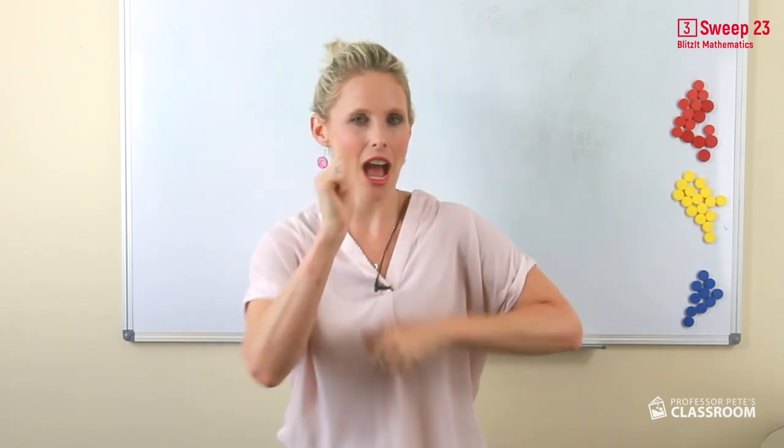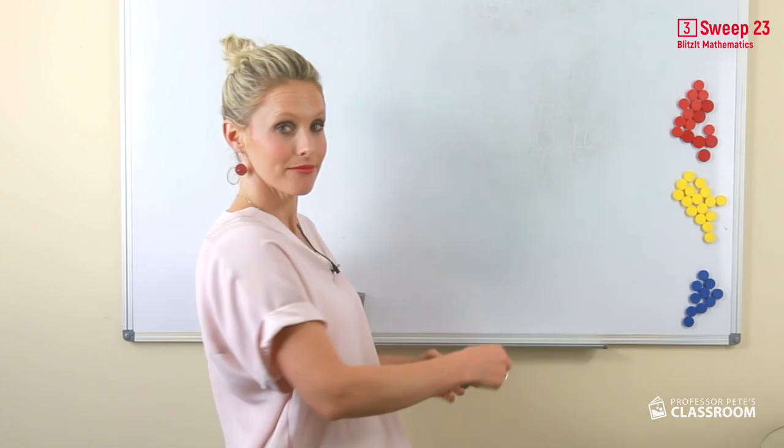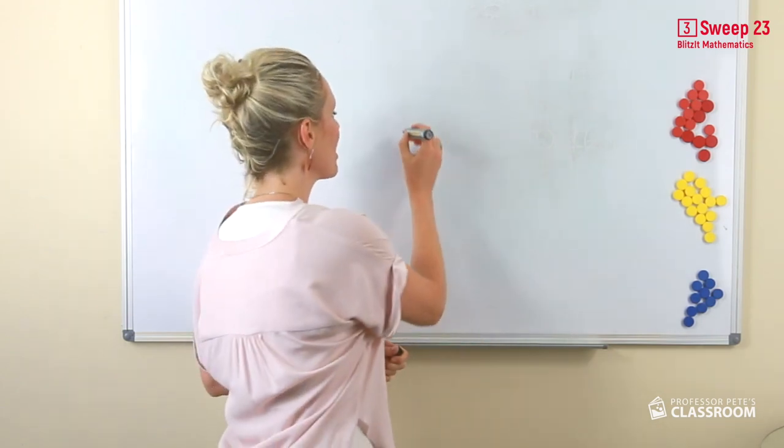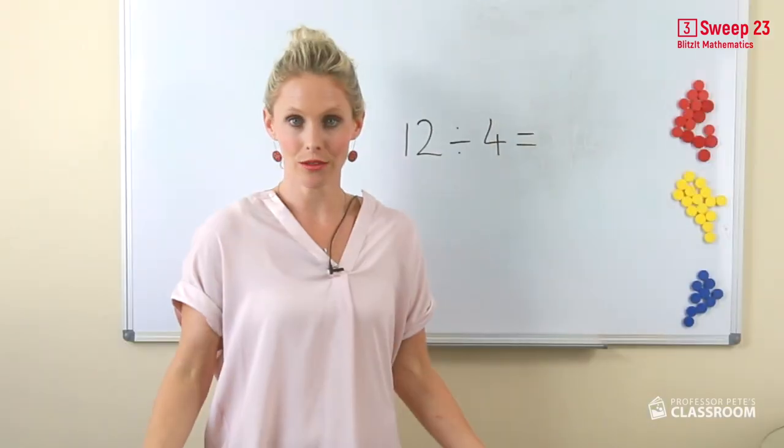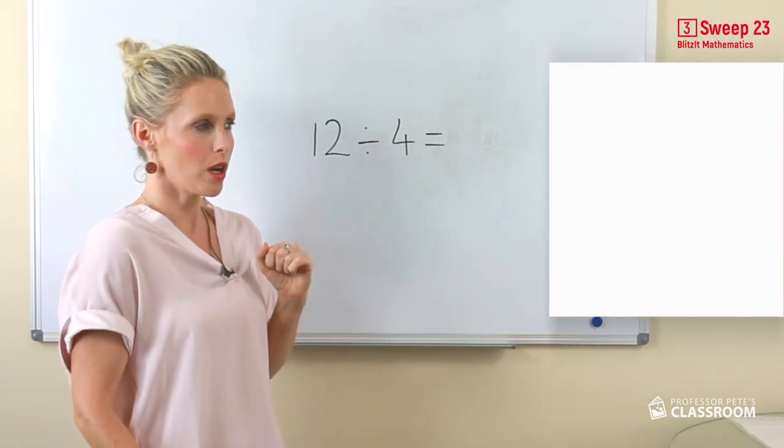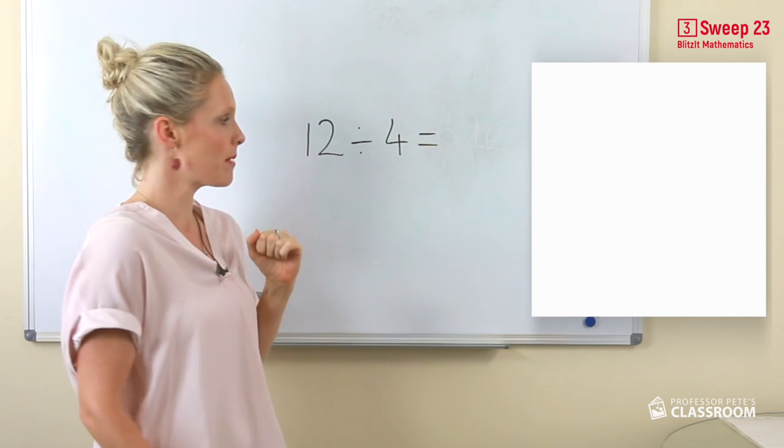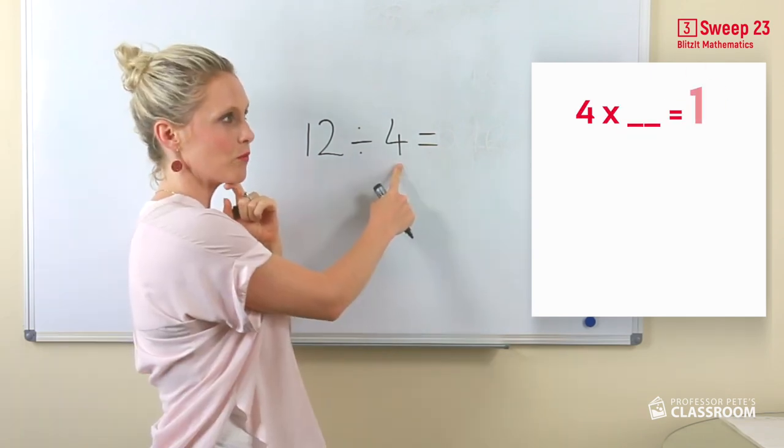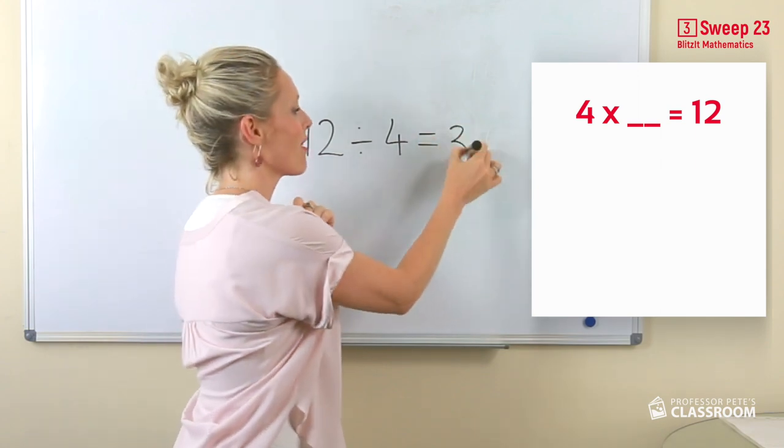Now let's see how quick you are. What is twelve divided by four? Think back to last time you did your four times tables. Four, what equals twelve? Three.